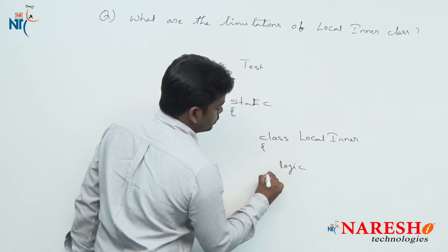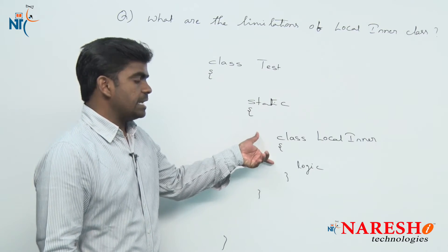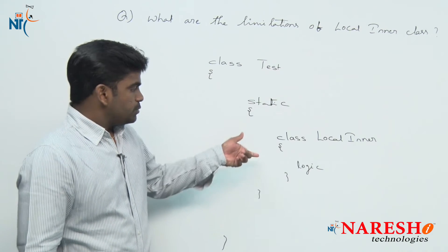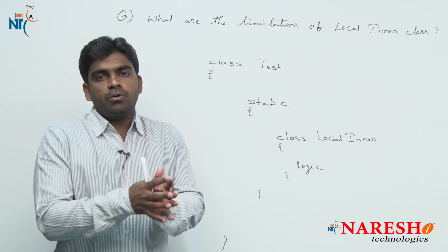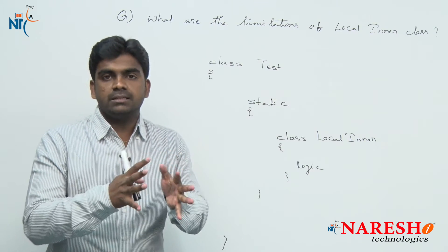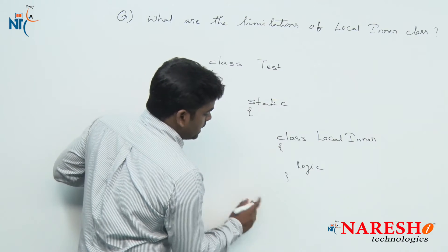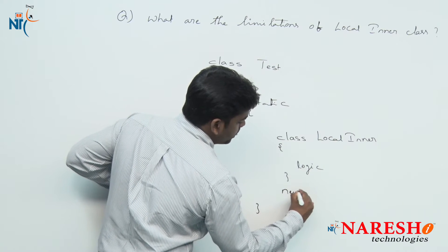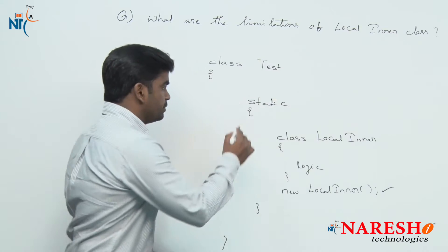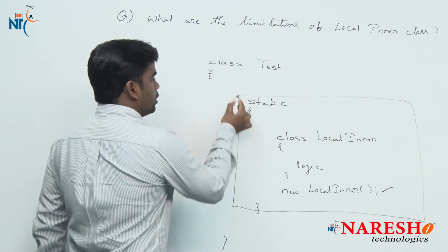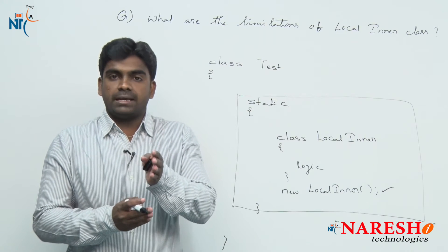The first limitation is that a local inner class cannot be accessed from outside of that block. The scope of the local inner class is inside that block or method only. So if you want to instantiate it, you have to create the object — new local inner class — within that block only. Local inner classes are not allowed to be accessed from outside of that block.